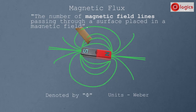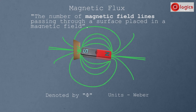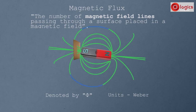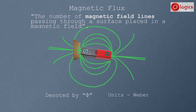Now place the cardboard's surface like this, near the pole of the magnet. Observe — six magnetic lines are passing, so magnetic flux is increased compared to before. We know that at the poles, magnetic strength is more, so more magnetic lines pass through the surface. Therefore, magnetic flux is more at the poles.